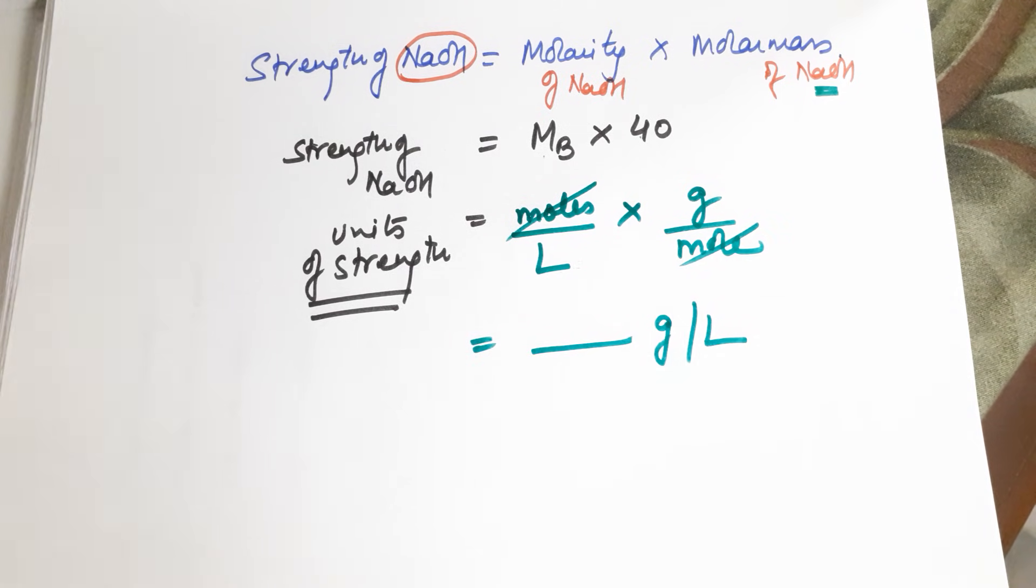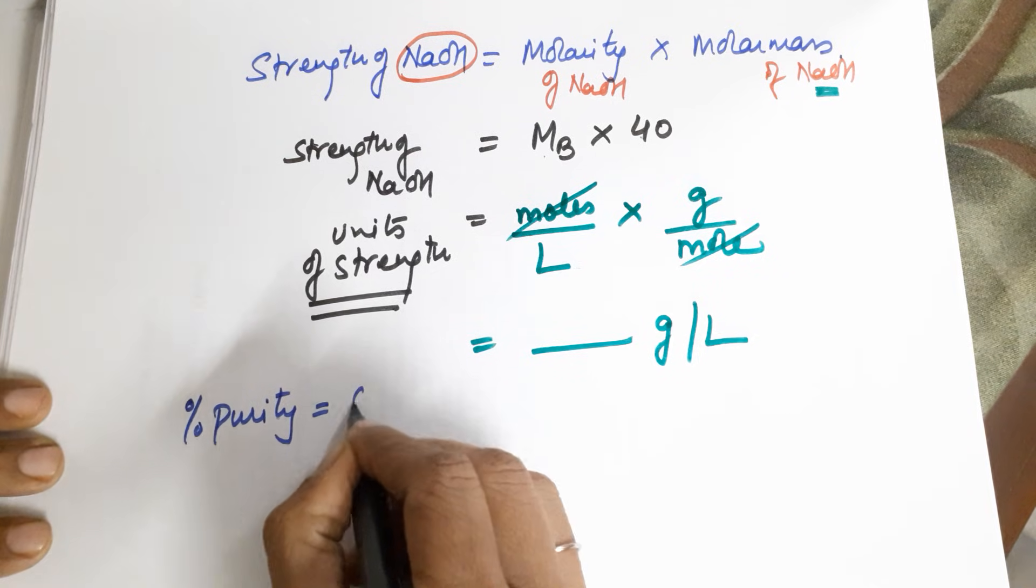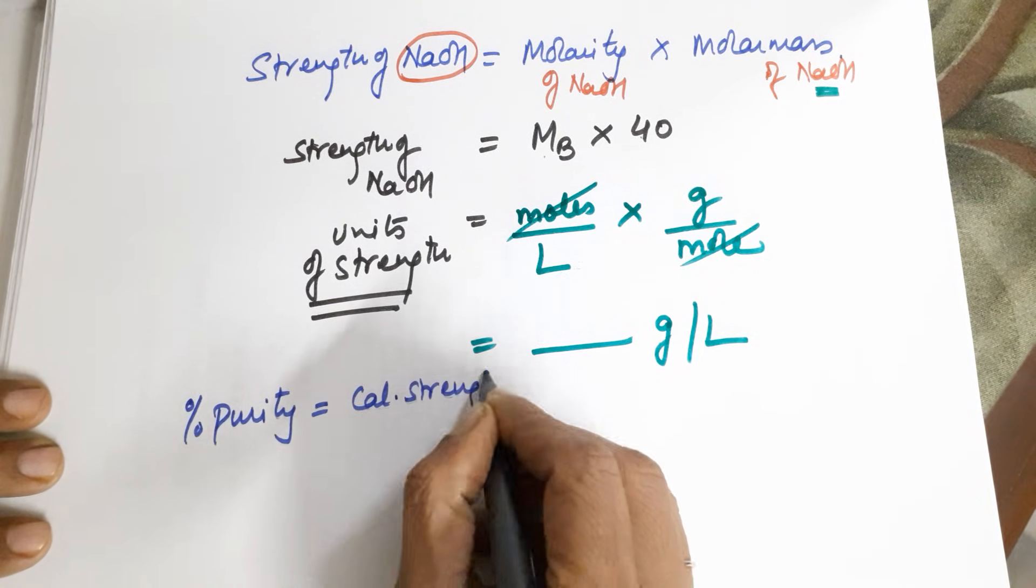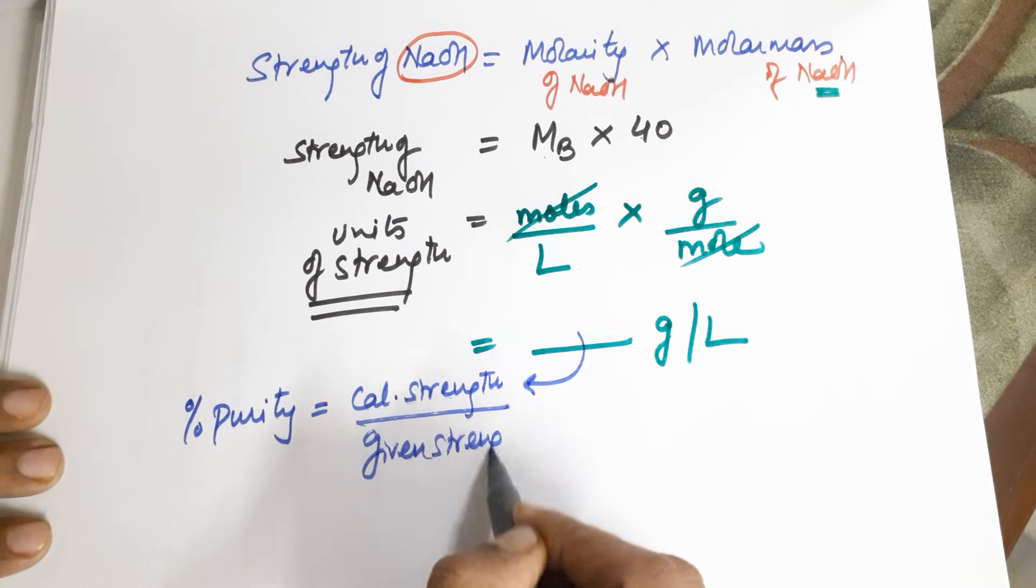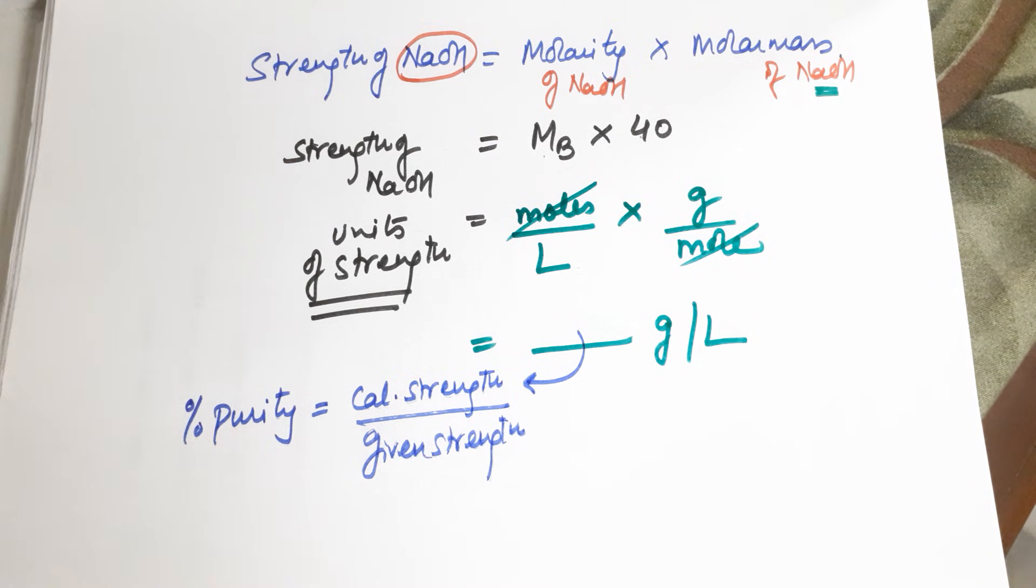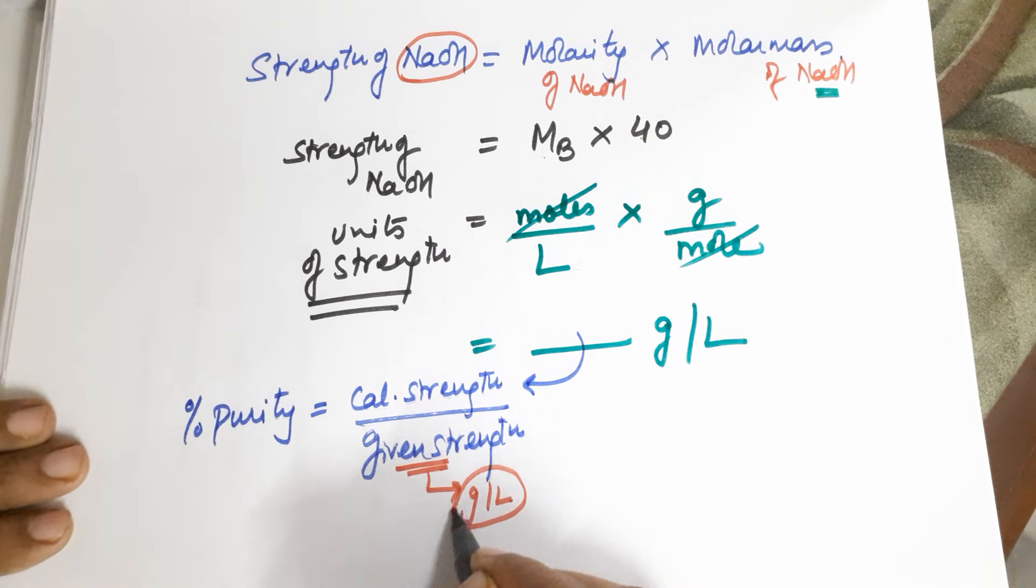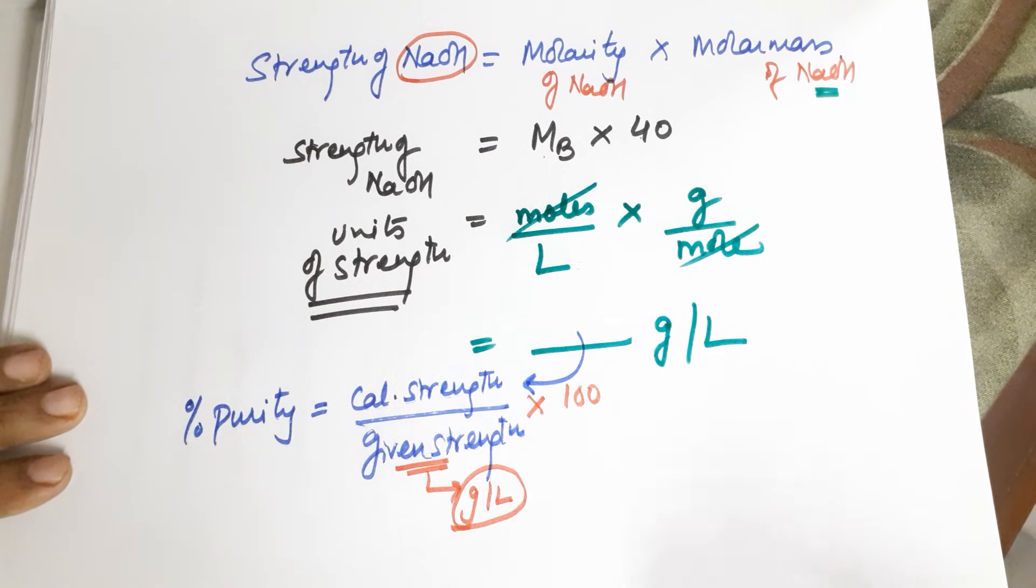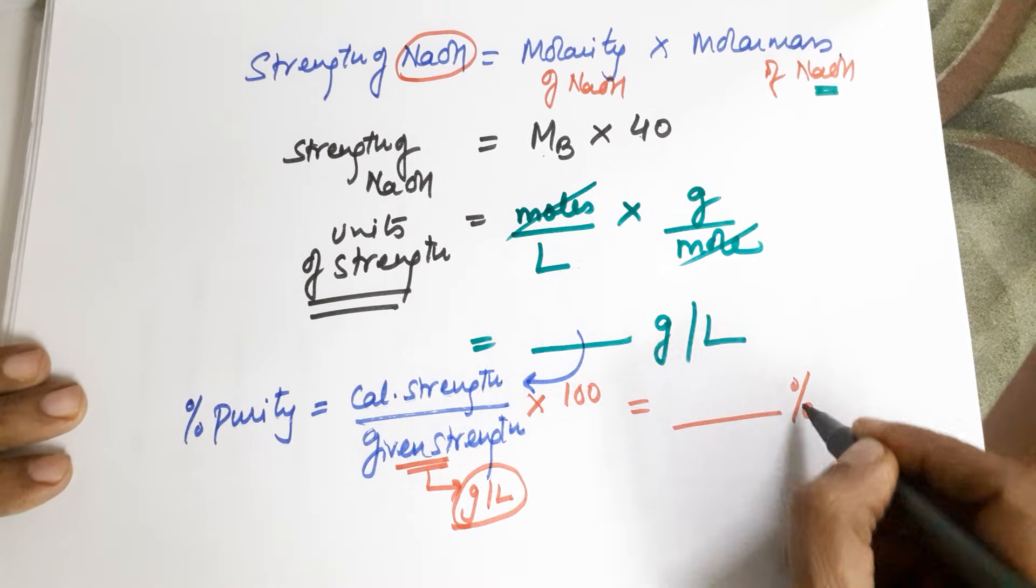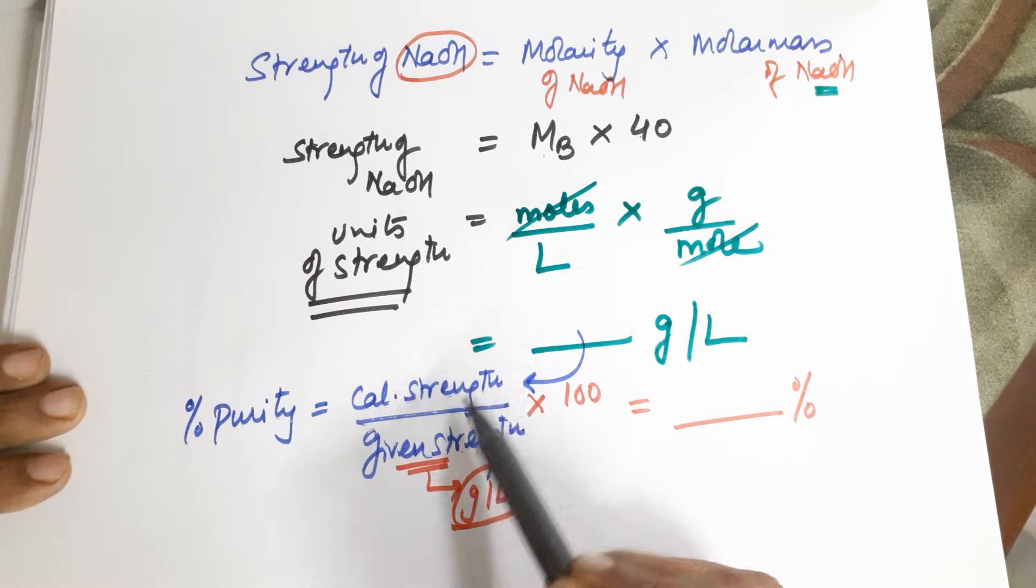At times in some cases there is something called as a percentage purity which is also asked. For that, the formula is calculated strength, which would be this value, divided by given strength, which would be in the question. This given strength would be given to you in the question in the units of grams per liter. So you can easily identify what is the strength given, and also you need to then multiply this value into 100. Whatever is the answer, please report it in percentage because the units would both numerator and denominator would be grams per liter. They would get cancelled and your answer reported would be in percentage.